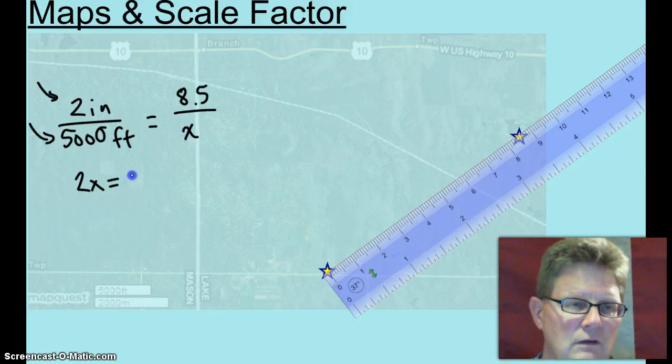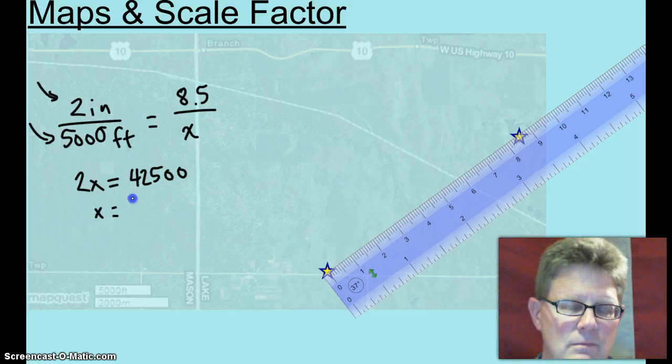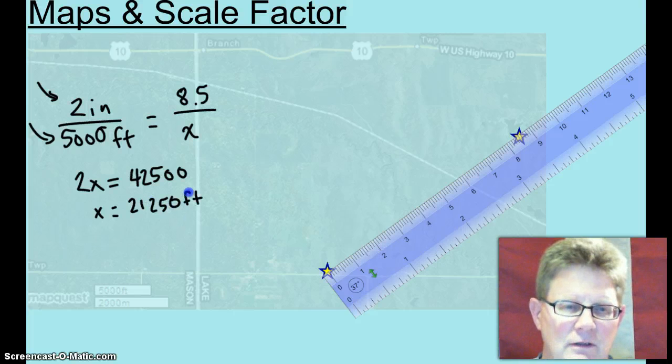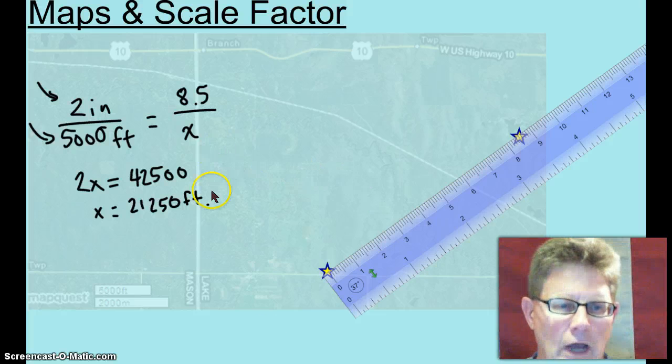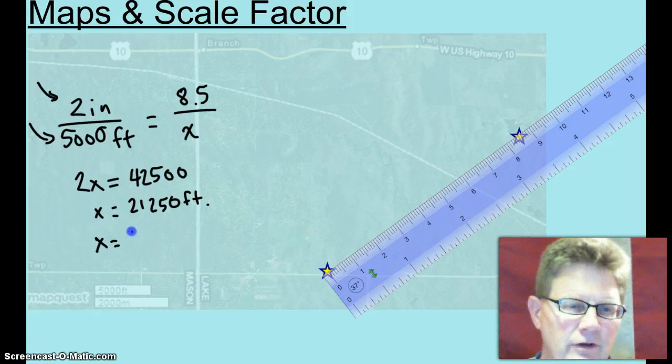42,500. And then I'm going to divide both sides by two, 21,250 feet. Now let's find out how many miles that is by dividing that number by 5,280. Hold on, I've got to go get a calculator. So I just divided out on a calculator and to the nearest hundredth of a mile, 4.02 miles.